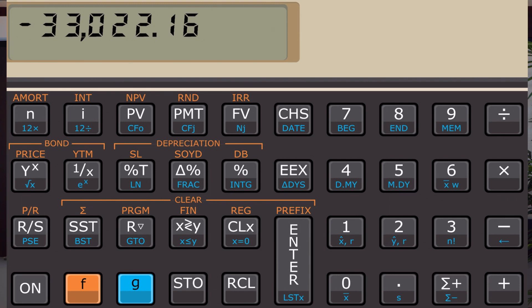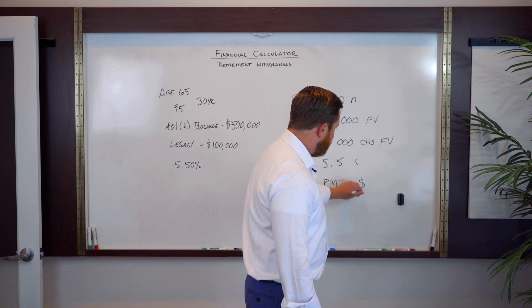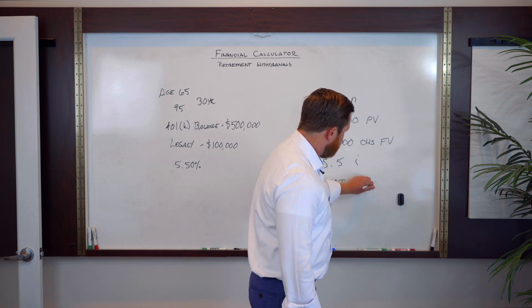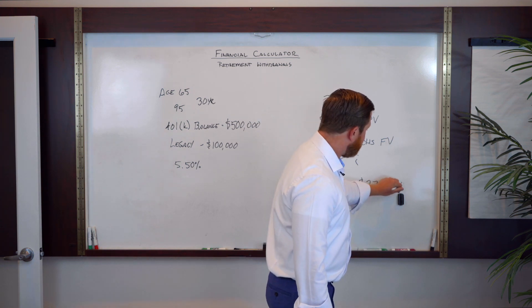Now that is actually an annual amount. So what I'm going to do is divide that by 12. Most clients think in terms of a monthly there. So what we have in our payment on a monthly basis is $2,751.85.